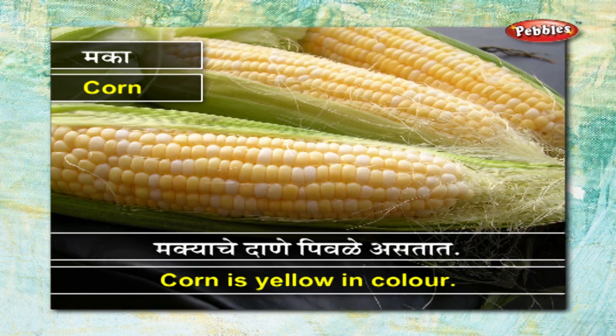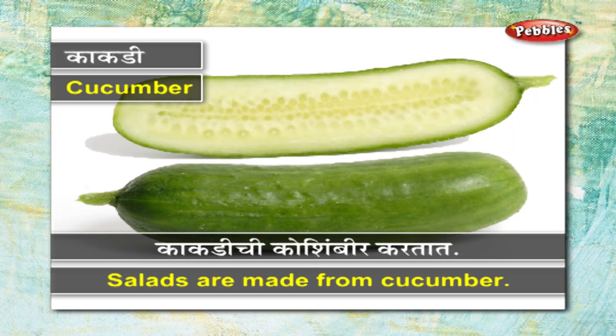मका - मक्याचे दाने पिवळे असतात. काकडी - काकडीची कोशिंबीर करतात.